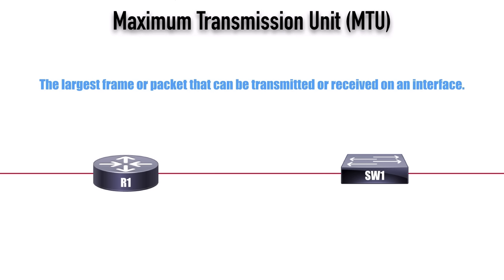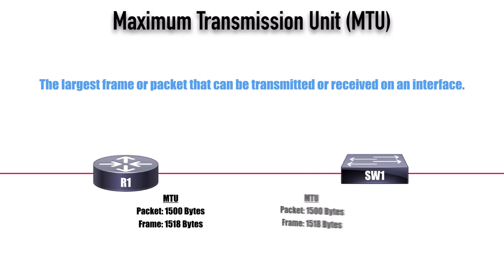Consider Router R1 on screen. Let's say that it has an MTU at Layer 3 of 1500 bytes — in other words, the largest packet size, not including the Layer 2 header found on a frame. So the largest packet size at Layer 3 is 1500 bytes. But maybe this is going over an Ethernet network. How big is an Ethernet header? It's 18 bytes. So if we include that Layer 2 header, the Layer 2 MTU size — the frame's MTU size — is going to be 1518 bytes. The idea is to have matching MTUs at each end of a link.